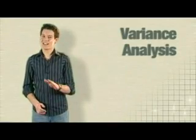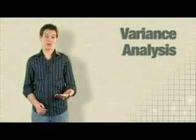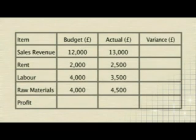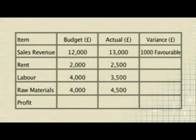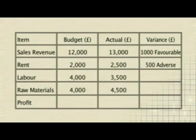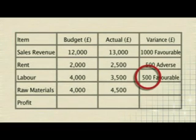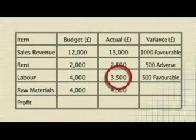Let's go through it and see how you got on. For sales revenue, you should have got £1,000 favourable variance, which is the difference between the actual and the budgeted figures. For rent, the variance is £500 adverse, because the firm had to spend £500 more than planned. For labour, it's £500 favourable, because they thought they'd spend £4,000 on labour but only spent £3,500.